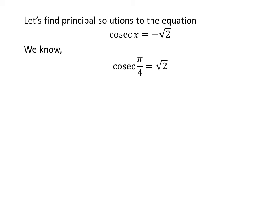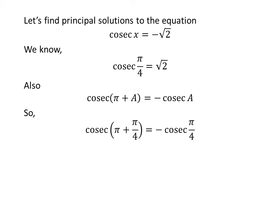We know the value of cosecant of π/4 is √2. We also know the trigonometric identity cosecant of (π + a) is equal to minus cosecant of a. The proof of this identity is given in the video appearing in the upper right corner, and the link is also in the description. Applying this identity gives cosecant of (π + π/4) is equal to minus cosecant of π/4.